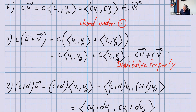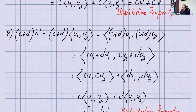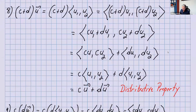For the distributive property distributing the vector: (C plus D) times U — use the components. (C+D) times U₁ and (C+D) times U₂. Expanding: (CU₁+DU₁, CU₂+DU₂). You can separate these as (CU₁, CU₂) plus (DU₁, DU₂), which is C times U plus D times U. That's the distributive property when you distribute the vector.